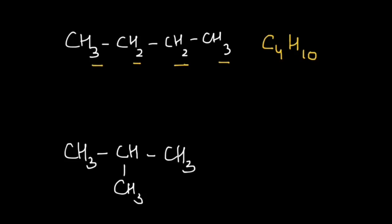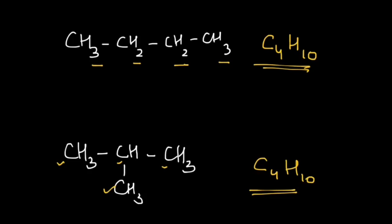If you do the same for the second compound, you will get 4 carbon atoms and 10 hydrogen atoms as well. So, the first thing we have checked is that the molecular formulas are the same for the two compounds. You can clearly see that the connections are different, therefore these two are structural isomers.